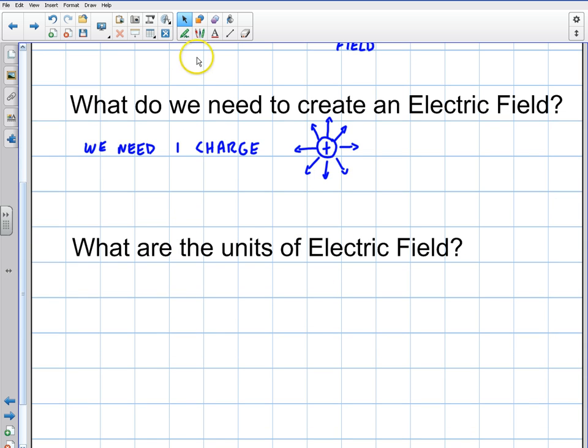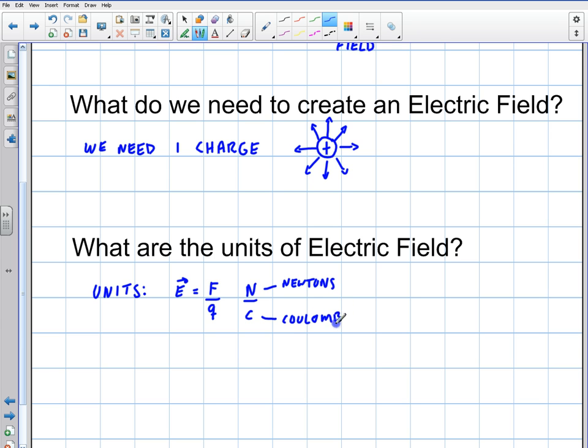The units of an electric field, the units are basically going to be this. The electric field, the units are going to be what? Well, it's going to be force per unit charge. We know that, right? So the units are going to be newtons per coulomb. So this is newtons. This is coulomb. And that's how we're going to measure field. That's the standard notation.